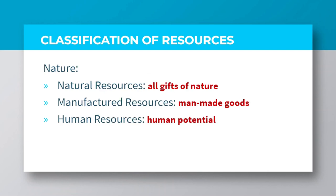In terms of the classification of resources by nature, this includes natural resources, manufactured resources, and human resources. Natural resources includes all gifts of nature, and that also shares similar characteristics with land, as mentioned in the first classification. Manufactured resources includes all goods created out of human innovations, and it also shares similar characteristics with capital. Human resources simply refers to man's potential and ability to produce goods and render services, and that can also be likened to labor, as mentioned in the first classification.